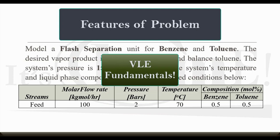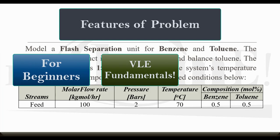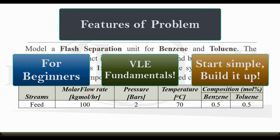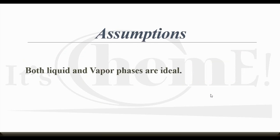This problem is relatively straightforward and can be found in introductory chemical engineering thermodynamics, making it particularly relevant for chemical engineering students. This video is specifically aimed at beginners who have just started using Aspen Plus. Watching this video has two advantages: first, beginners can connect the theory taught in class with what happens in simulation software and process simulators like Aspen Plus.